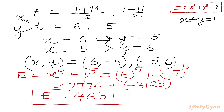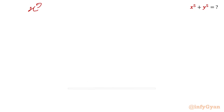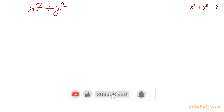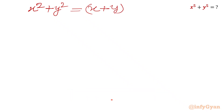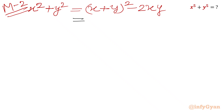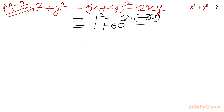Now for method 2, I will use the algebraic formula x² + y² = (x + y)² − 2xy. Substituting x + y = 1 and xy = −30: x² + y² = 1² − 2(−30) = 1 + 60 = 61.